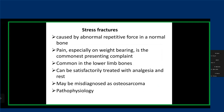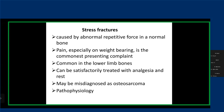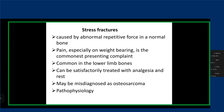Stress fractures occur because of abnormal repetitive force on a normal bone. There are specific sites where we tend to see stress fractures, usually in the lower extremity. It's common in what we call 'weekend warriors,' athletes, and new military recruits subjected to extensive training their bodies are not used to. The most common sites are the tibia, the second metatarsal, and the femur neck. It's common in athletes, dancers, and military recruits.